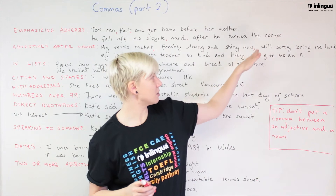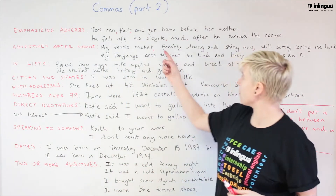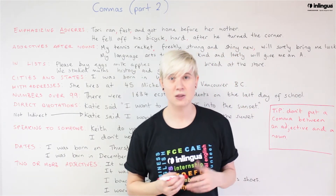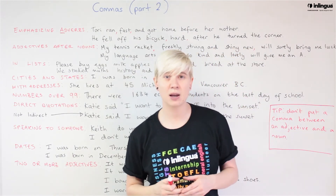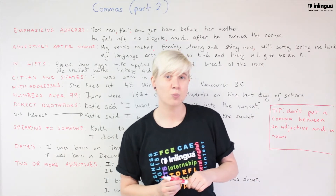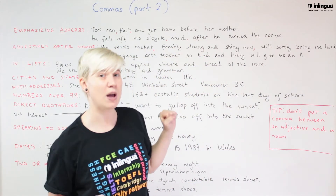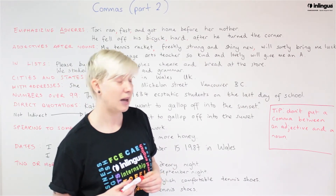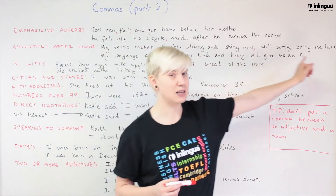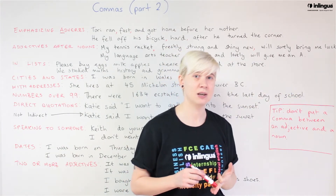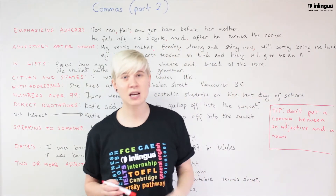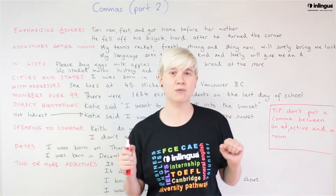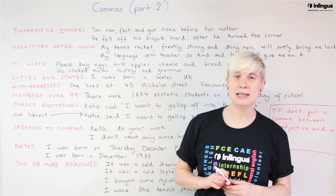We need the other comma to close in the part of the sentence that is the description. This is very similar to parentheses. When we're using a comma like this to separate part of a sentence out, we can almost take this information away if we want to: 'My tennis racket will surely bring me luck' is still a complete sentence with a subject, verb, and object. But we want to make it more interesting by adding adjectives, and we need commas either side of those adjectives because we are leading with our noun.